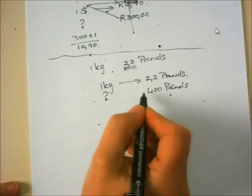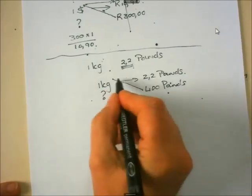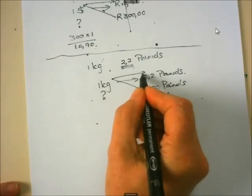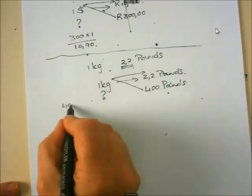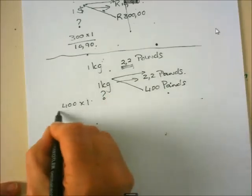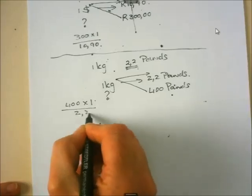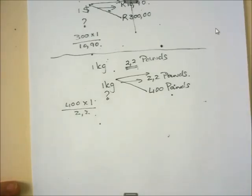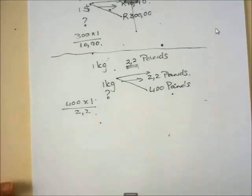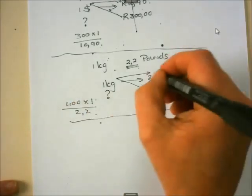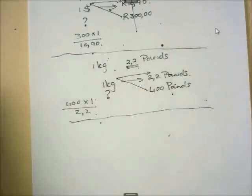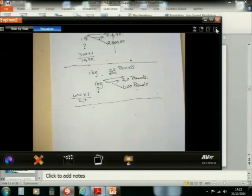To get this answer, I must cross multiply and I must divide. So it's 400 multiplied by 1 divided by 2.2. Okay? They are all applications of ratios. But in the cases of pounds and inches and those things, we will give you the conversion factor. You don't have to know them.